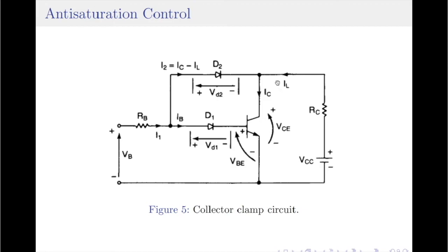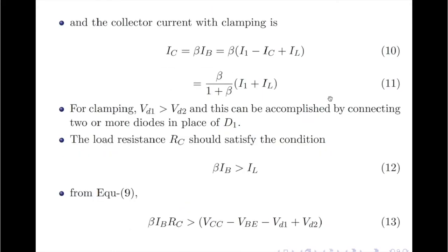Having understood the importance of clamping, let us understand the requirements for clamping. For clamping to be successful, the voltage across diode D1 should be greater than the voltage across diode D2. If exact same diodes are used for D1 and D2, you can increase the voltage across D1 by simply connecting another diode in series with D1. Also, the load resistance RC must satisfy the condition β × IB = IC > IL.